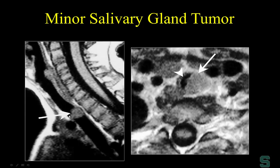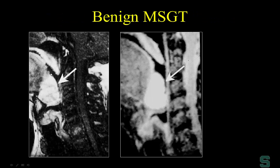Another minor salivary gland tumor — this was a mucoepidermoid carcinoma involving the subglottis. Radiologically indistinguishable from squamous cell carcinoma, so we add it to our differential. Interestingly, this was a benign minor salivary gland tumor — a pleomorphic adenoma involving the larynx. On gradient echo MR, it was very high signal on T2. A solid laryngeal tumor that is high signal on T2 is not the typical finding for squamous cell carcinoma. Transposed to the parotid gland, this appearance would be classic pleomorphic adenoma.